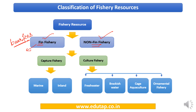Classification can also be done based on the method of obtaining fish: capture fishery versus culture fishery. In capture fishery, you utilize available natural resources and simply collect fish using fishing gears — no rearing involved. In culture fishery, you provide an environment and rear the aquatic species — it is a cultivation process.